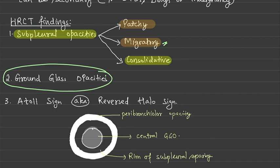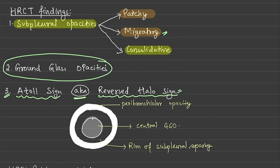Third is the atoll sign, which is diagnostic of Cryptogenic Organizing Pneumonia, also known as the reverse halo sign.